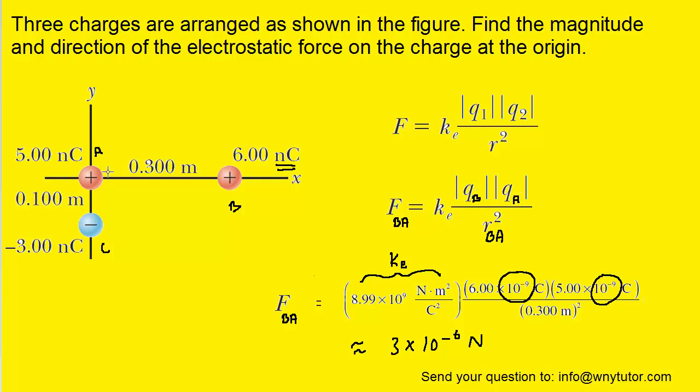As for the direction, we'll notice that charge B and charge A have the same sign, so they're going to push away from each other. It's a repulsive force. That means that charge B is going to push charge A away from it towards the left, and we want to make sure we label FBA pointing to the left.